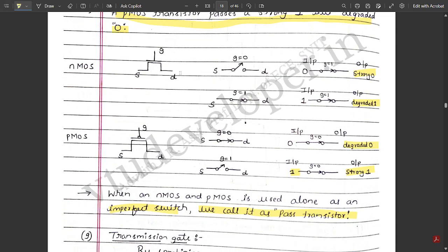For example, if the NMOS transistor passes a degraded 0 and a strong 1, or the PMOS transistor passes a strong 1 and a degraded 0, when that condition applies we say the switch is an imperfect switch — it does not match the particular circuit shown. Those kinds of switches which do not follow the expected pattern, we call them imperfect switches, and we name them as pass transistors.